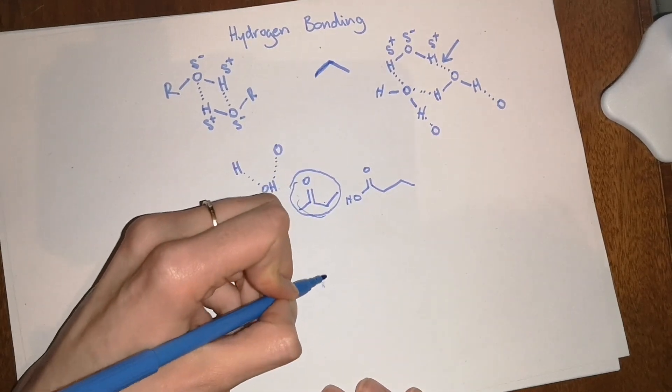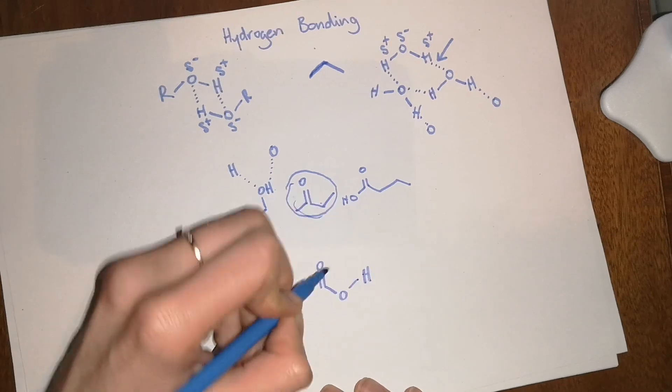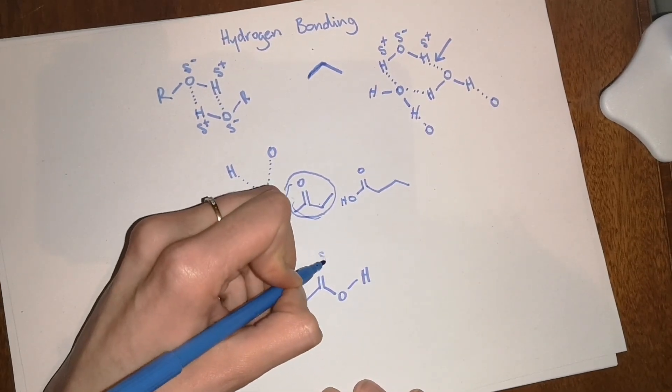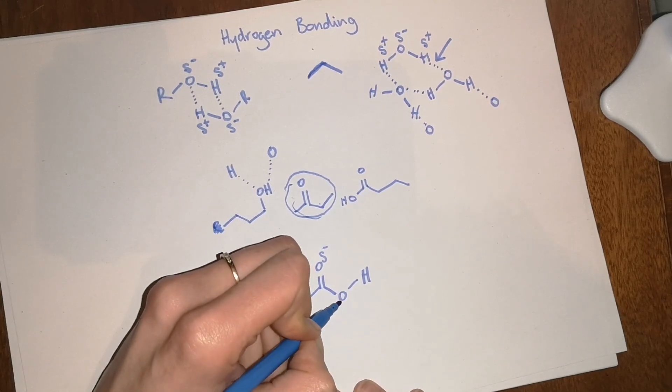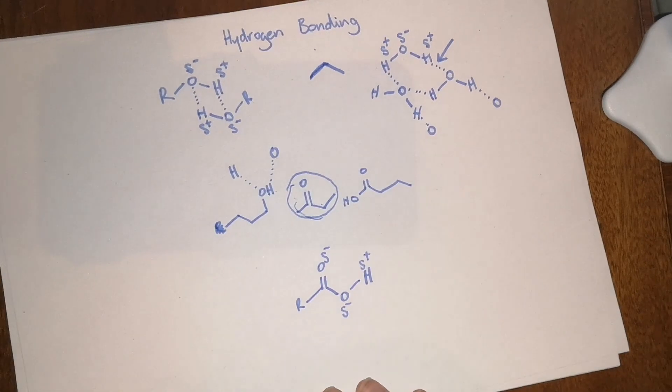So if you draw this out again like so, this oxygen, so we can have any OR group there, this oxygen is partially negatively charged, this oxygen is also partially negatively charged, and this hydrogen has a partial positive charge.